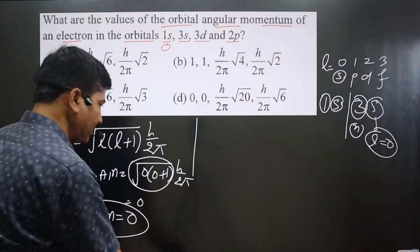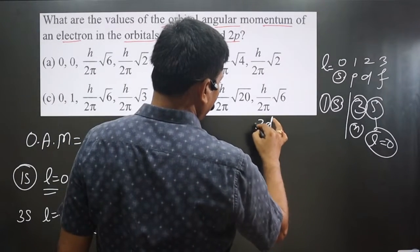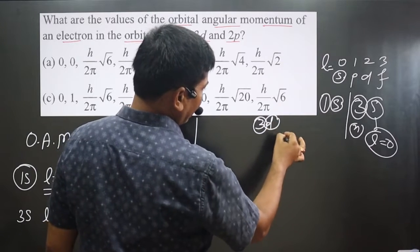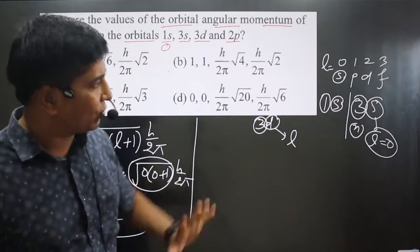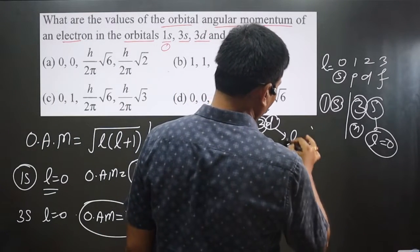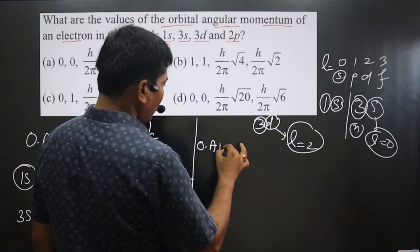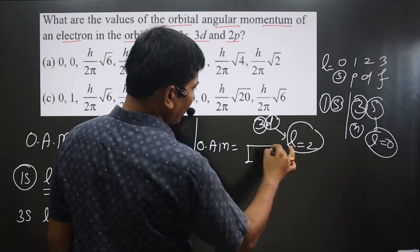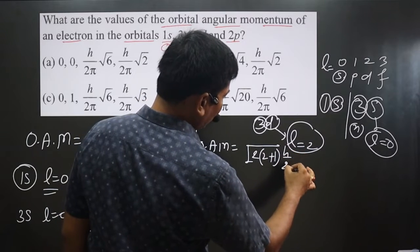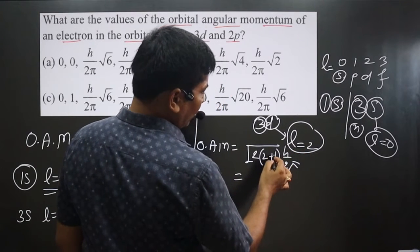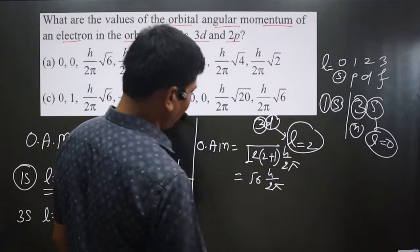Next we have 3d. Here '3' is the n value, and for a d orbital l = 2. So orbital angular momentum = √(2 × (2+1)) × h/2π = √(2 × 3) × h/2π = √6 × h/2π.